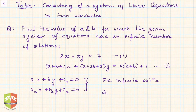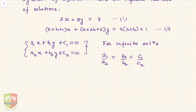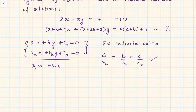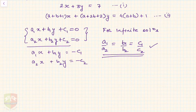For coincident lines (infinite solutions), the condition is: a1/a2 = b1/b2 = c1/c2, where a1 and a2 are coefficients of x, b1 and b2 are coefficients of y, and c1 and c2 are the constant terms. Make sure the equations are in standard form with all terms on the left-hand side and 0 on the right, or consistently with constants on the right — either way, the same condition is valid.